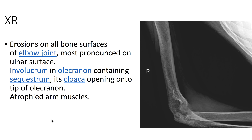X-ray of the right elbow shows erosions of all bone surfaces of the elbow joint, most pronounced on the ulnar surface. We see a sequestrum and a surrounding involucrum in the olecranon, with a cloaca opening onto the tip of the olecranon.